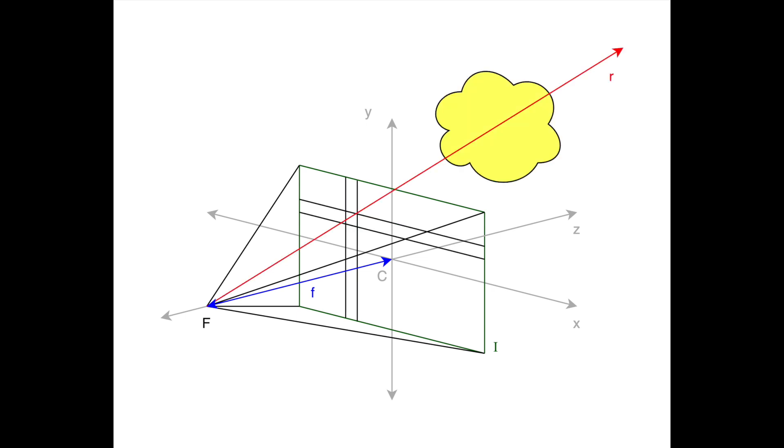To be able to do this, we need to know the position, or pose, of each training image in relation to the object, which is done in a pre-processing step known as structure from motion.